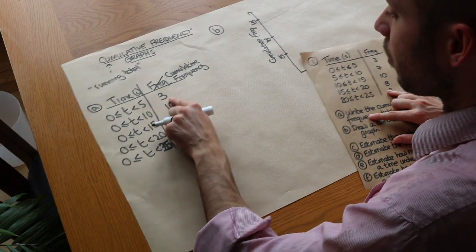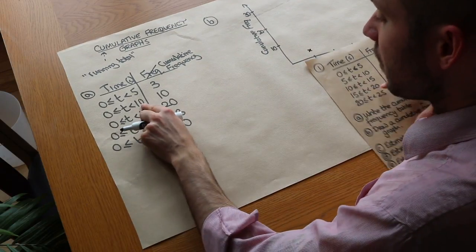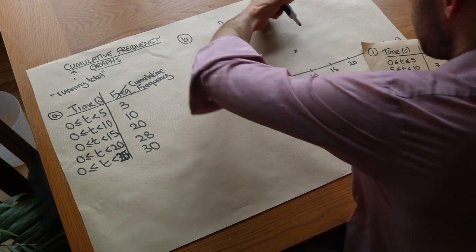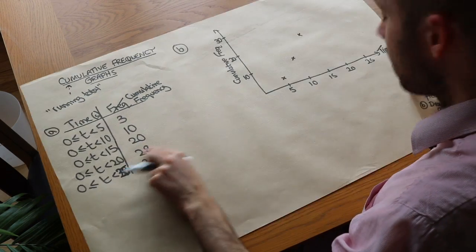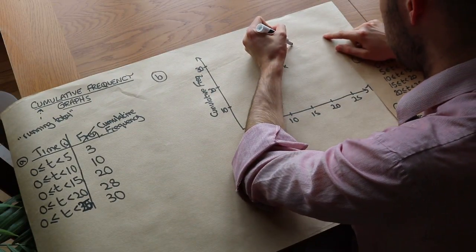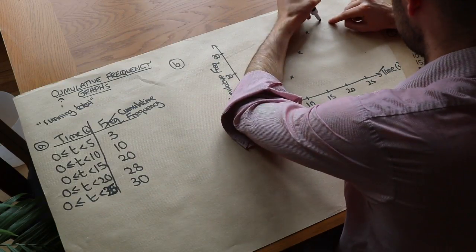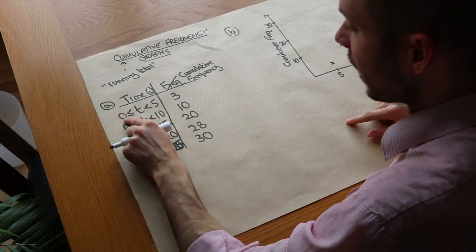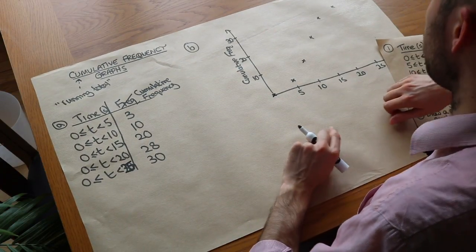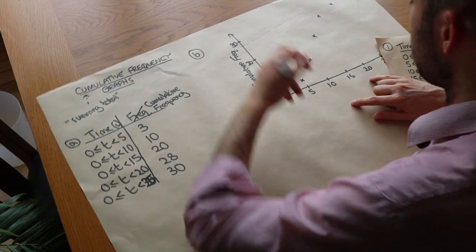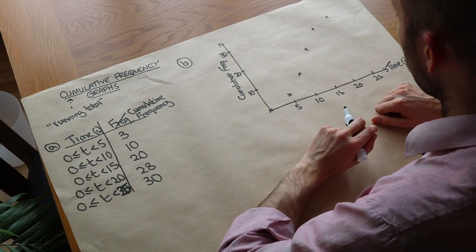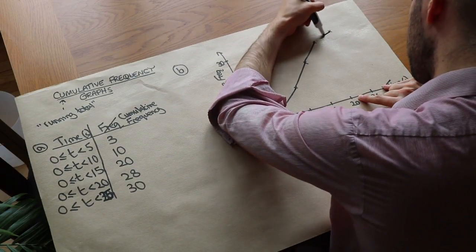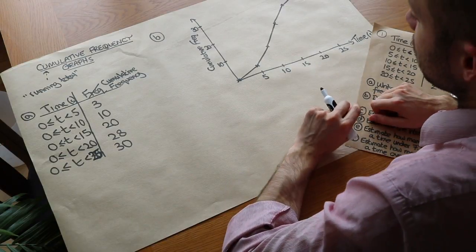So we use the end value five with a cumulative frequency of three, then ten with a cumulative frequency of ten, then fifteen with twenty, then twenty with twenty-eight, and finally twenty-five with thirty. We also know that we have no people with a time of up to zero seconds, so we plot an additional point at the origin — zero, zero. We plot the lowest value with a cumulative frequency of zero. We then connect these points either with a curve or with straight lines.